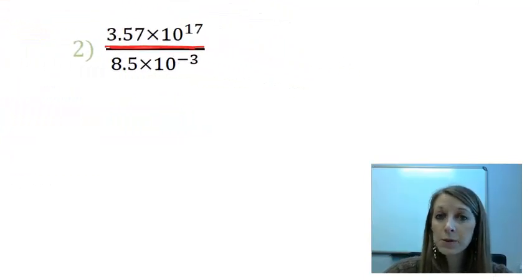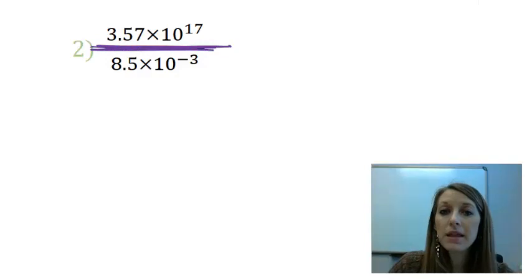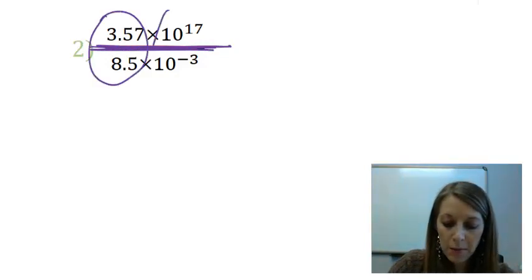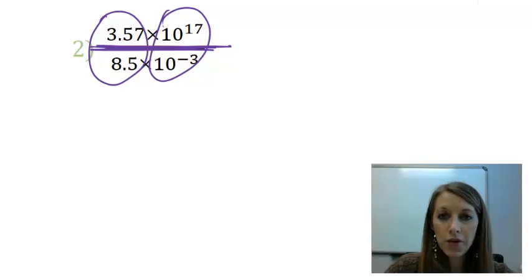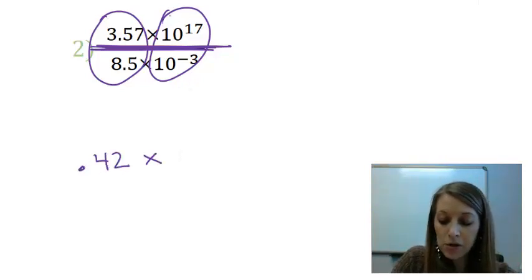This example is pretty much the same, except this is a division problem. So I need to make sure to divide these numbers. But the easiest way to do this by hand is to put our like pieces together. So first, I have 3.57 divided by 8.5. And I'm going to go ahead and use my calculator to give me that answer. That gives me 0.42.